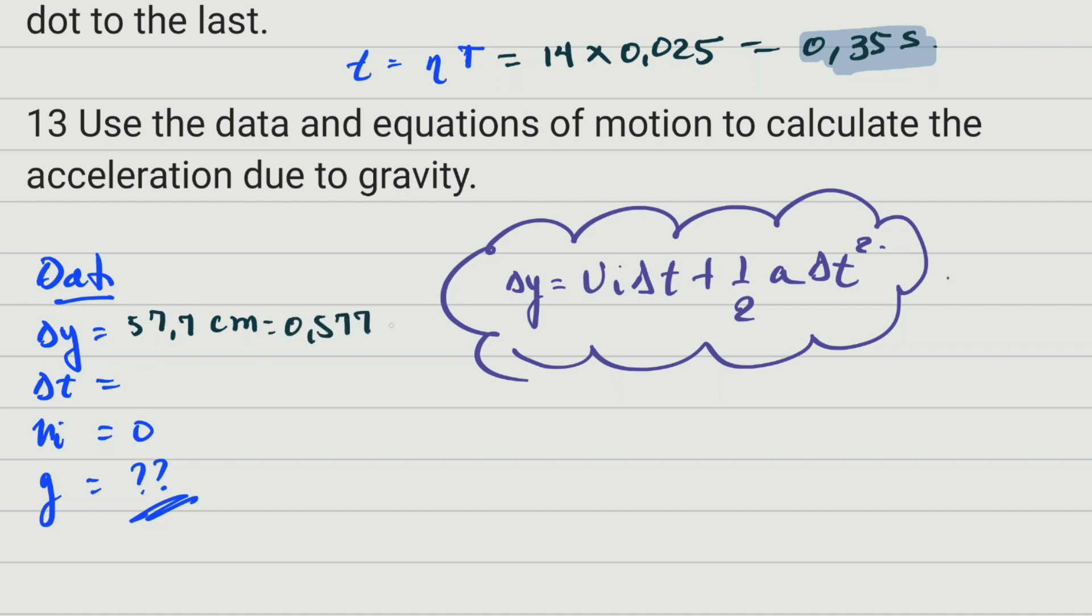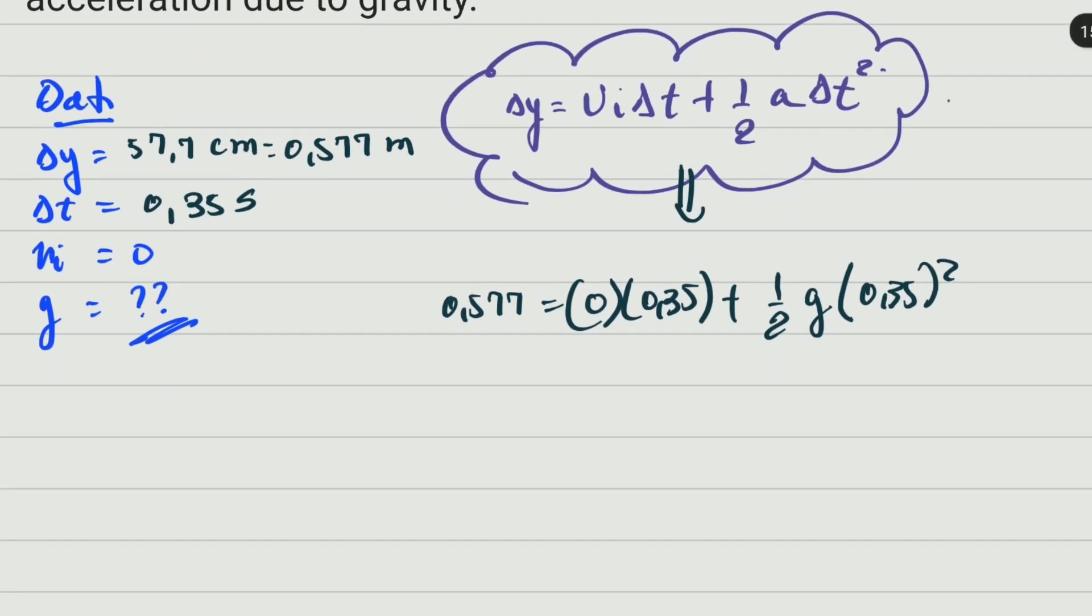If we substitute in this formula, we have 0.577 = 0 × 0.35 + ½ × acceleration × (0.35)². When you do this calculation, you get 0.577 × 2 ÷ (0.35)².